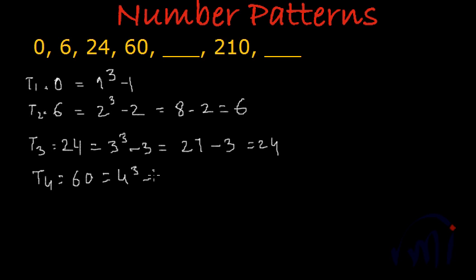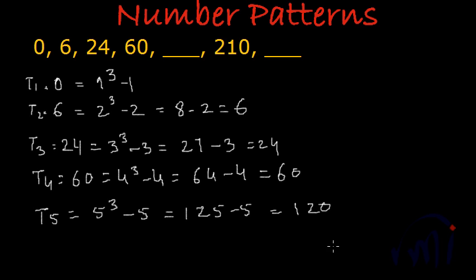The fifth term should be 5³ - 5. The cube of 5 is 125, minus 5 equals 120. So T5 = 120. Let me underline this. Now let's use 210 as our checkpoint, since this is the sixth term.